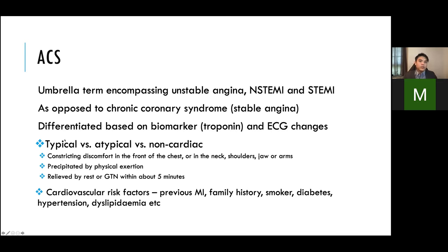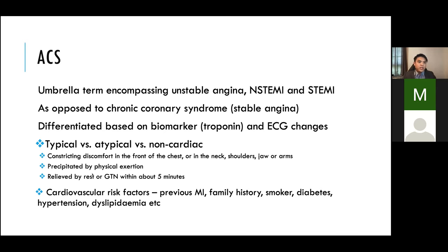ACS - acute coronary syndrome - is the umbrella term for unstable angina, non-ST elevation myocardial infarction, and ST elevation myocardial infarction. This is as opposed to chronic coronary syndrome, previously called stable angina. The differentiation between the different types of ACS is via biomarker and ECG. In patients with chest pain and a raised troponin it will be either NSTEMI or STEMI depending on ECG changes; in patients with chest pain at rest without troponin rise, it will be unstable angina.